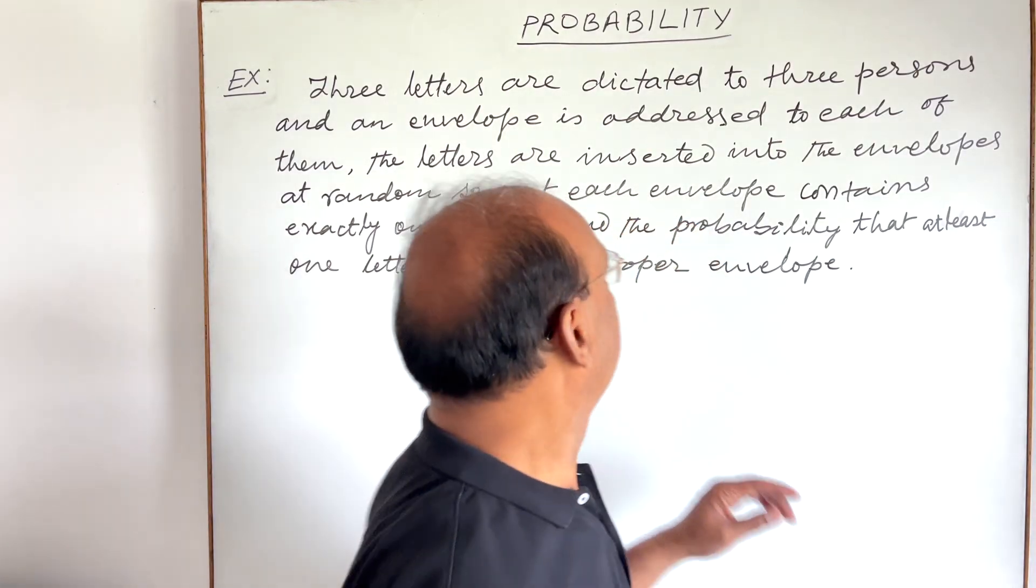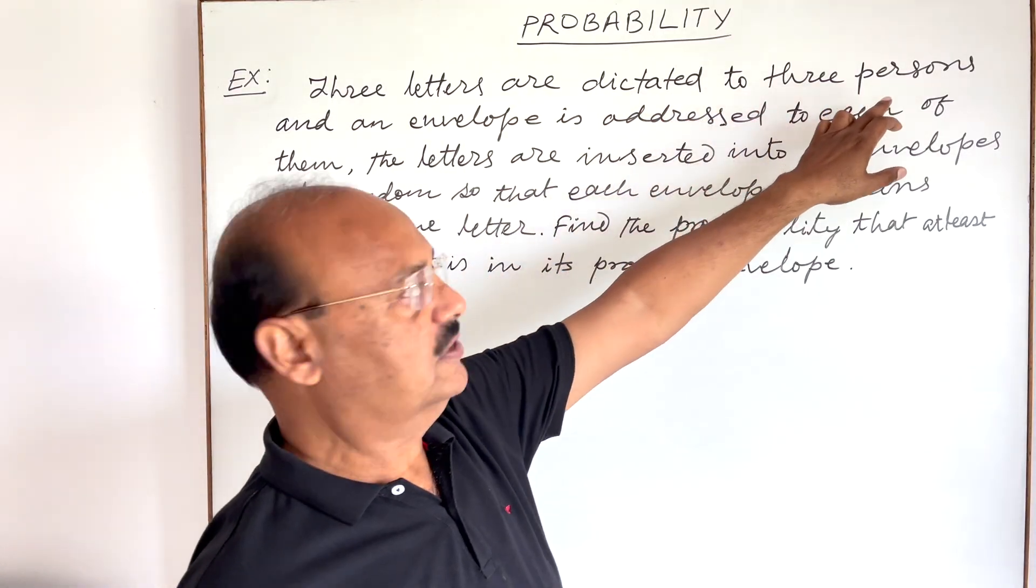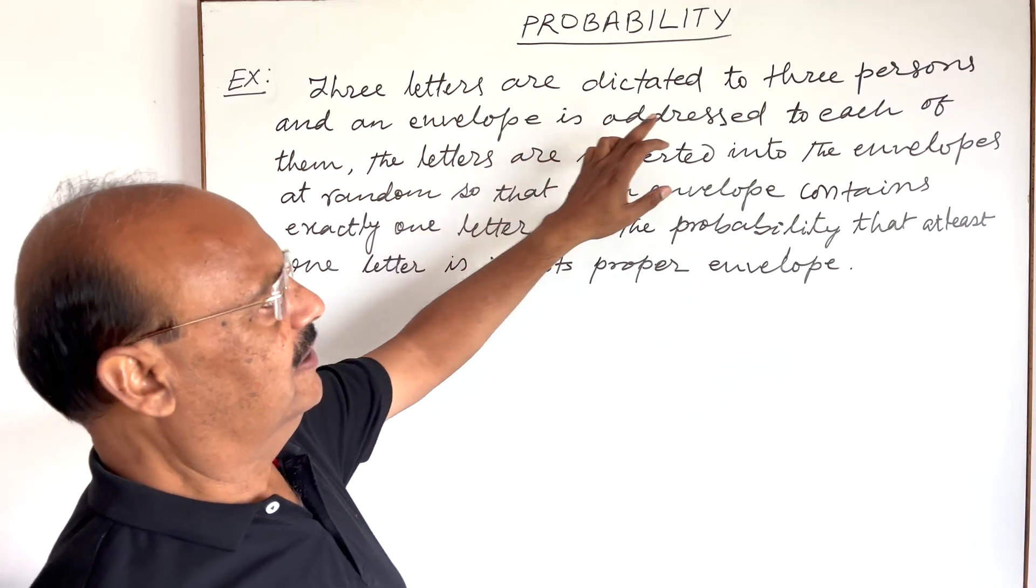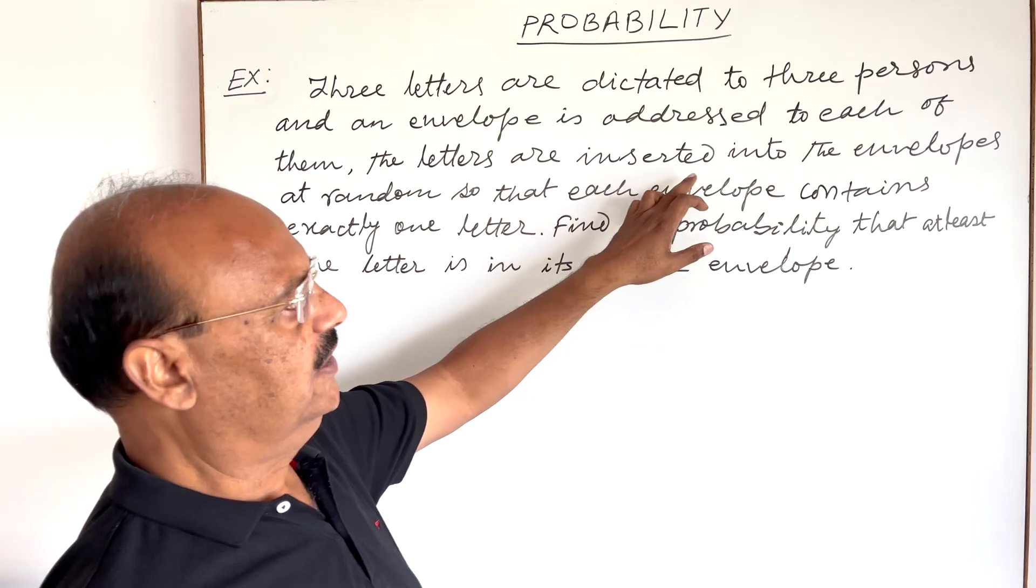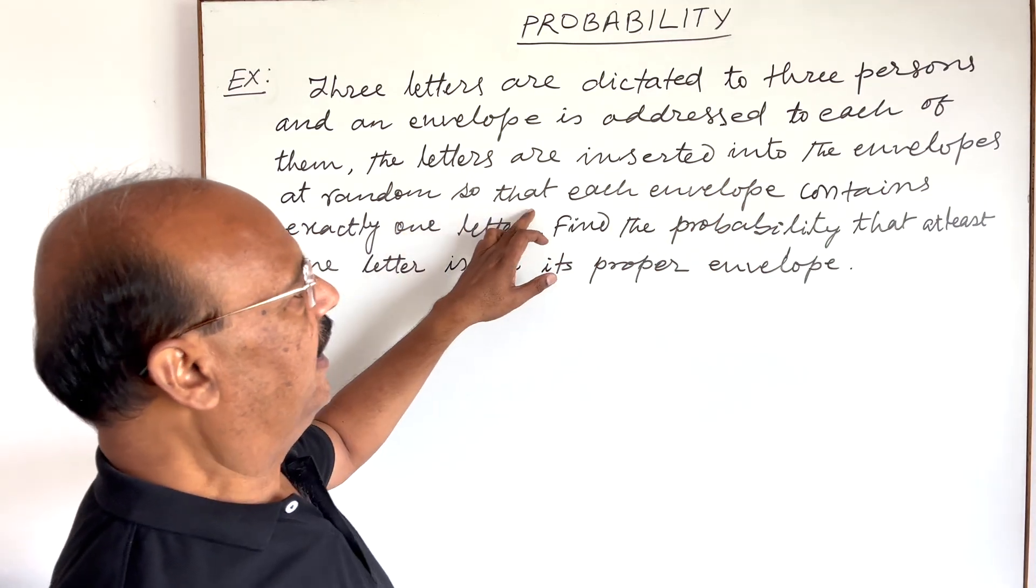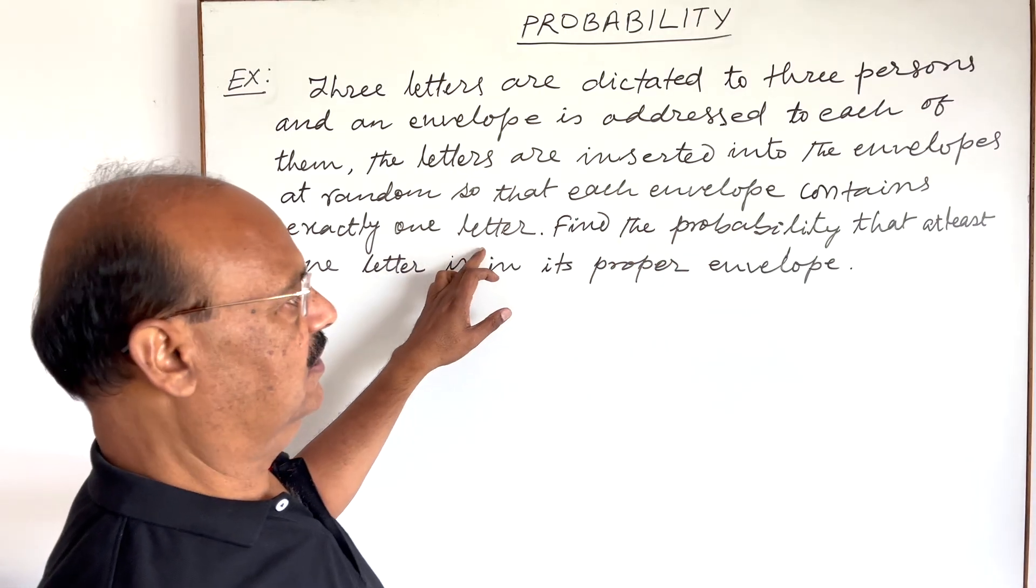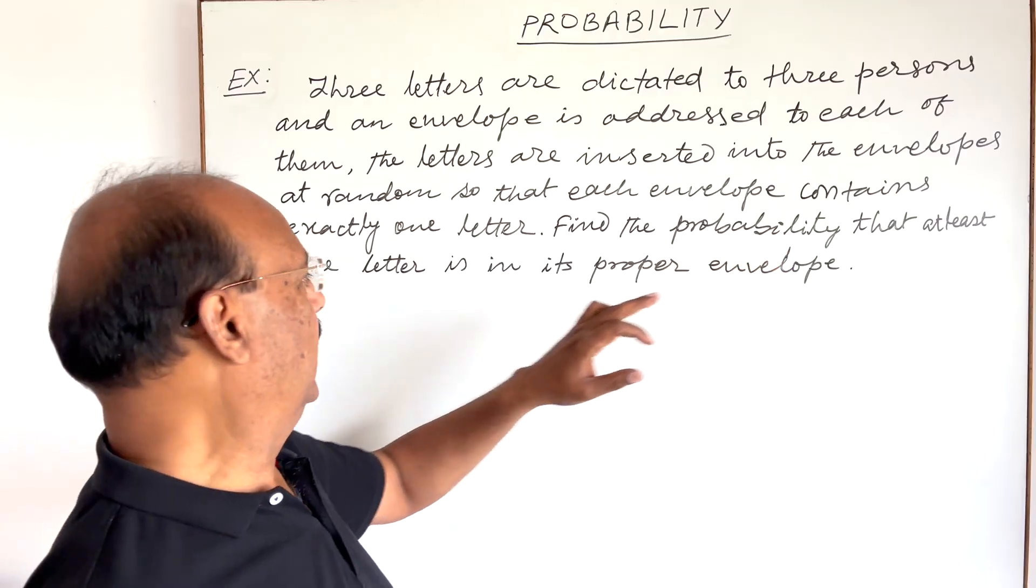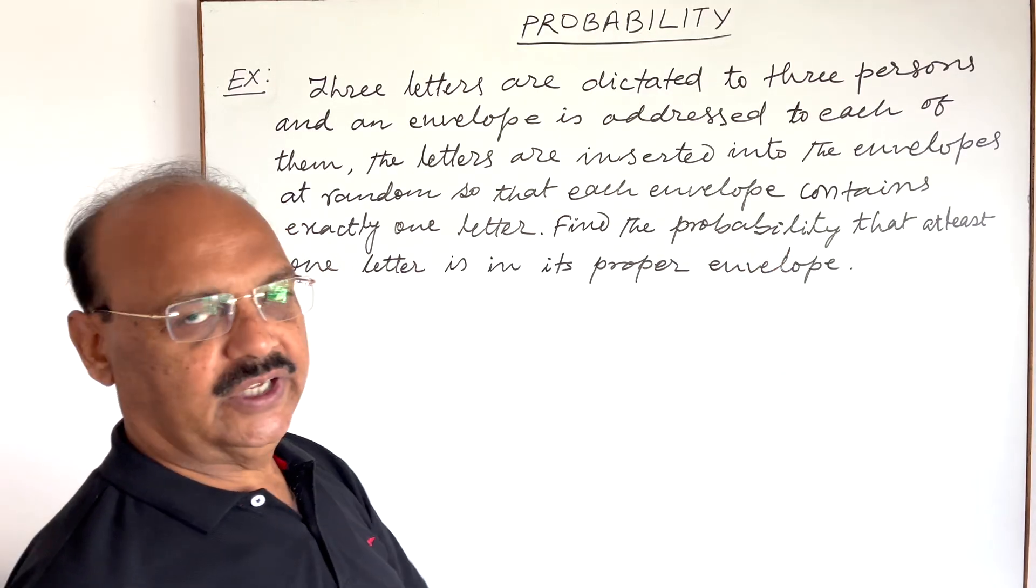Here is the question: Three letters are dictated to three persons and an envelope is addressed to each of them. The letters are inserted into the envelopes at random so that each envelope contains exactly one letter. Find the probability that at least one letter is in its proper envelope.